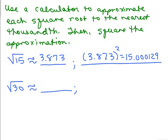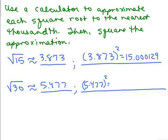Try it for the square root of 30. If you approximate to the nearest thousandth you should get 5.477. Now take 5.477 and square it in your calculator: 5.477 squared is 29.997529. That's just a little bit under 30, but it's pretty close. Notice: when I rounded up for square root of 15, squaring that gave a little over 15. For square root of 30, since I didn't round up, squaring that approximation gives a number just a little bit less than 30.